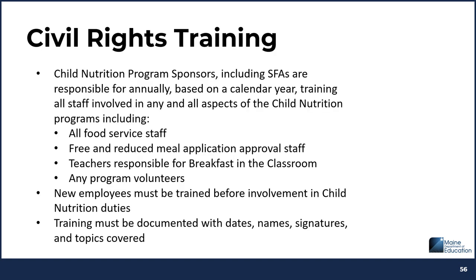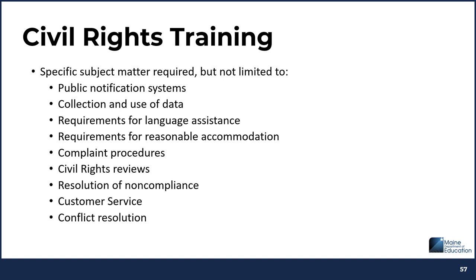The next topic is training. Child nutrition program sponsors, including school food authorities, are responsible for annually — based on a calendar year — training all staff involved in any and all aspects of the child nutrition programs, including all food service staff, free and reduced meal application approval staff, teachers responsible for breakfast in the classroom, and any program volunteers. New employees must be trained before involvement in child nutrition duties. Training must be documented with dates, names, signatures, and topics covered. Specific subject matter required includes public notification systems, collection and use of data, requirements for language assistance, requirements for reasonable accommodation, complaint procedures, civil rights reviews, resolution of non-compliance, customer service, and conflict resolution.